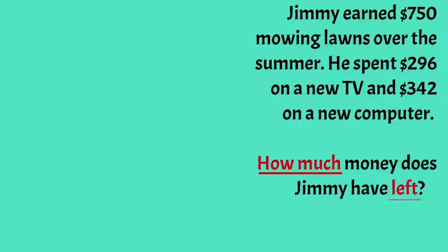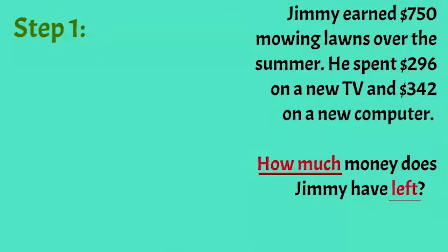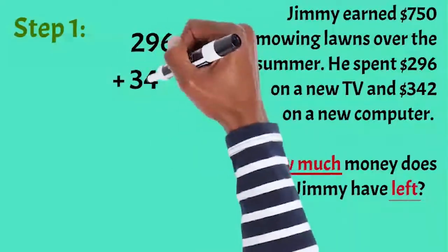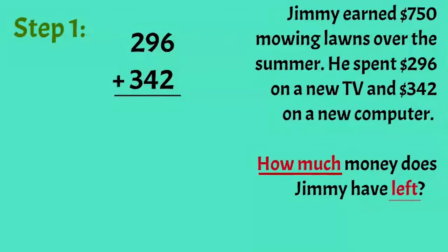That's right, but what is the total amount we have to subtract? We need to do another step first. First, let's add up how much he spent in all. So, $296 for the TV plus $342 for the computer.